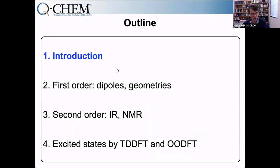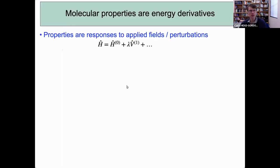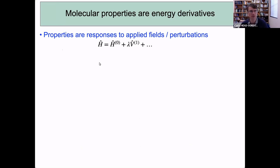The outline here will be a brief introduction to molecular properties, followed by showing you a bit of data and a summary of recent research about what DFT can do for different types of molecular properties. A molecular property is simply how a molecule responds to something that stresses it — an applied field or perturbation of some kind: an electric field, a magnetic field, moving a nucleus, this kind of stuff.